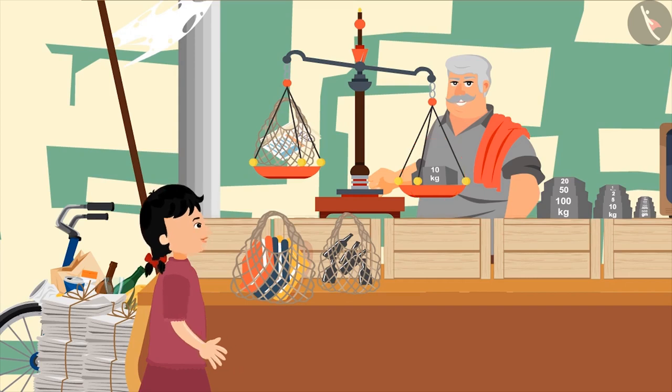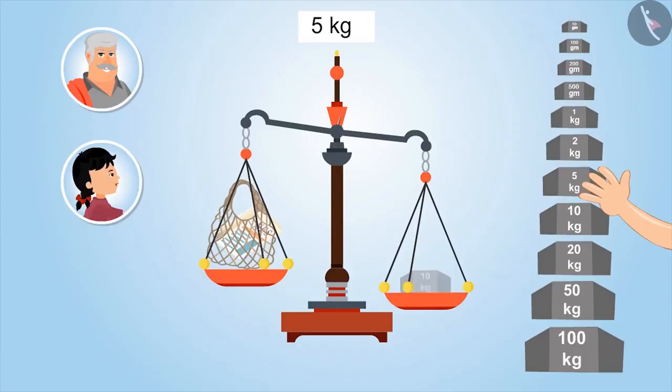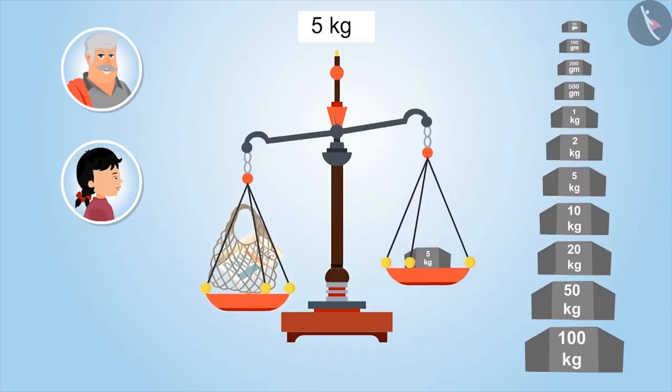Hmm, Uncle, what should we do now? We will put stone which weighs less than 10 kgs. So, can you tell me which weighing stone is smaller than 10 kgs? 5 kgs. Let's place this. Uncle, now the side carrying the newspaper has moved downwards. Which means? This means that the weight of the newspaper is more than 5 kgs. Yes.